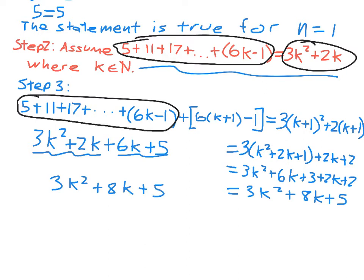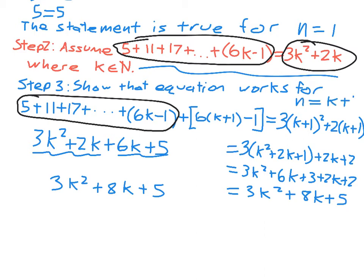Now the left side and the right side are the same, so we're pretty much done. Step three is to show that the equation works for n equals k plus 1, and we've done that. In the book they say this proves the conjecture. The symbol to signify your proof is done is a filled-in box.